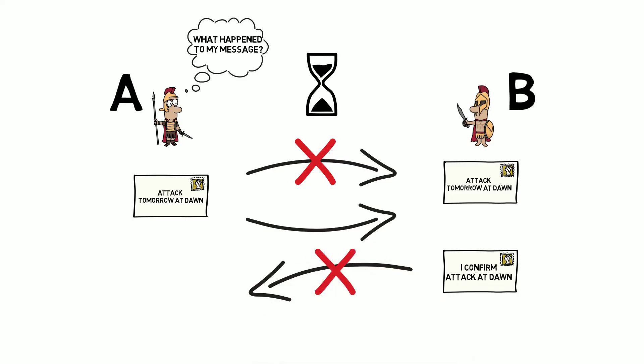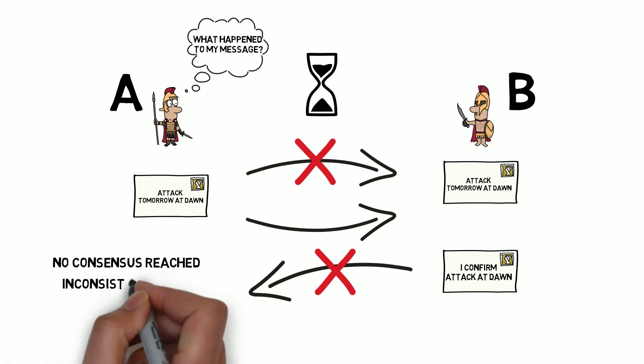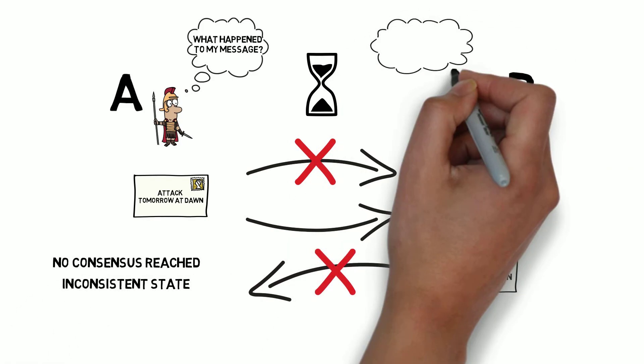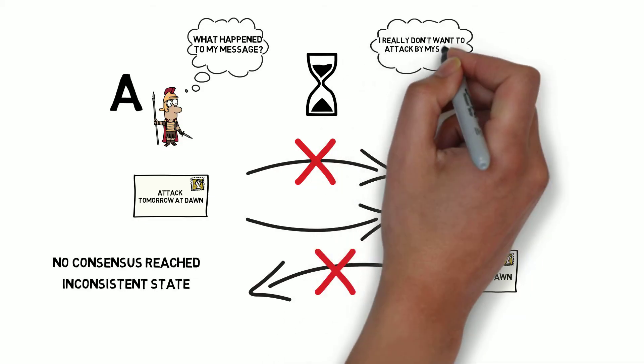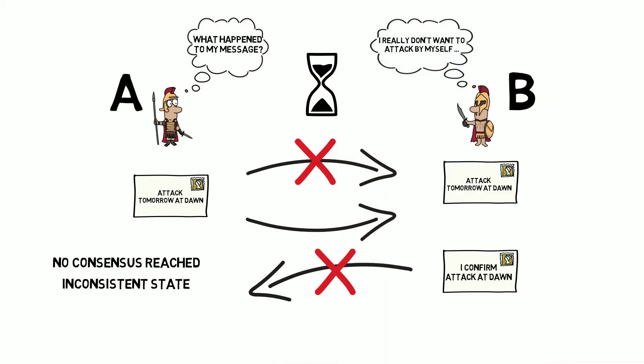In both scenarios, they cannot come to a consensus again, as A is not able to tell if his message was lost or if it was B's confirmation that didn't get through. Again, we ended up in an inconsistent state which would result in either general A or B attacking by himself. We can quickly realize that no matter how many different scenarios we try and how many messages we send, we cannot guarantee that consensus is reached and each general is certain that his ally will attack at the same time.